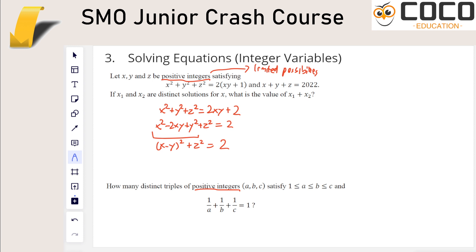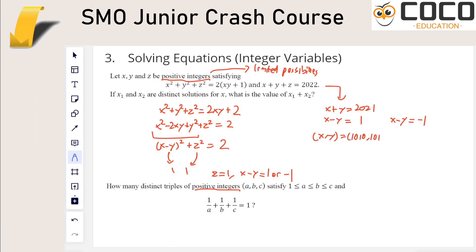A square number plus a square number equals two. Because these are integers, they really are square numbers in the traditional sense, so both must equal one. This implies z is one, and x minus y is one or negative one. With z equal to one, we have x plus y equals 21 and x minus y equals one or negative one. It's not difficult to see that (x, y) would be (10, 11), (11, 10), or (10, 10) and vice versa. Wait — (10, 11) or (11, 10).